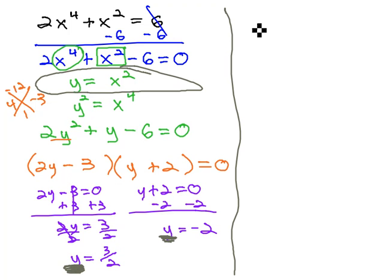So instead of y equals 3 halves, we'll say x squared equals 3 halves. And instead of y equals negative 2, we'll say x squared equals negative 2, and solve both of these equations for x.